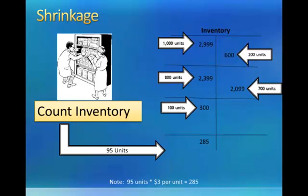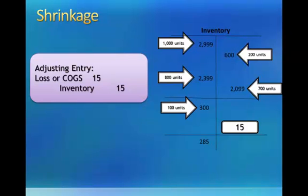If we have 95 units on hand, each unit is approximately $3 per unit, so that means we need a balance of $285 in our inventory account. How do we get from $300 to $285? We need a credit of $15 in our inventory account, which means we need to make an adjusting entry. Our adjusting entry includes the credit to inventory for $15 to get us to the desired ending balance, and it also includes a debit to either a loss account or cost of goods sold. Both of these accounts reduce net income. It should be logical that if inventory disappears, that's a cost of doing business that should increase our expenses and reduce net income.